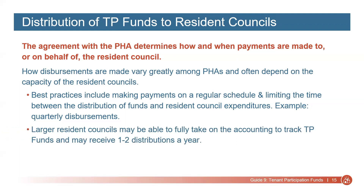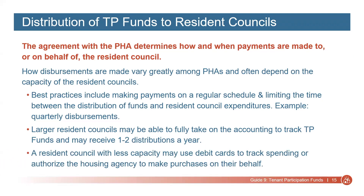Larger Resident Councils may be able to fully take on the accounting required to track tenant participation funds, have their own bank account, and may be able to receive only one or two large distributions for the entire year. If the Resident Council is smaller or has less capacity, it may be appropriate for the housing agency to maintain more control. Some housing agencies issue debit cards, which allow them to closely track spending, while other Resident Councils authorize the housing agency to make purchases on their behalf.